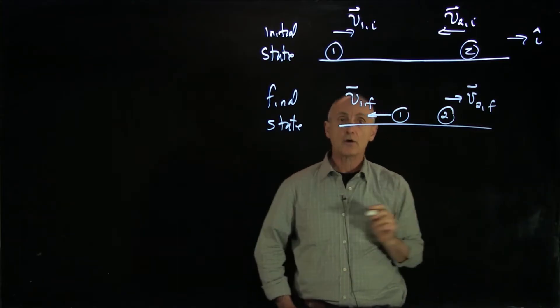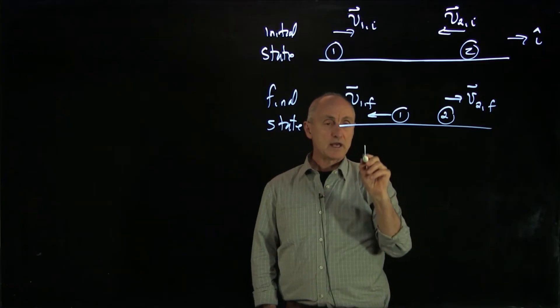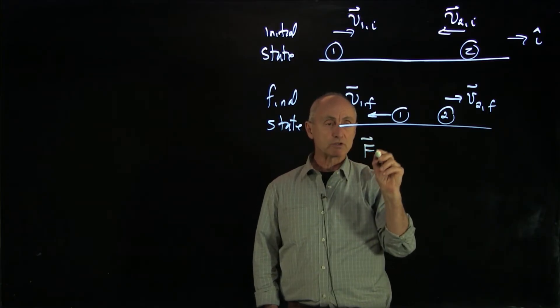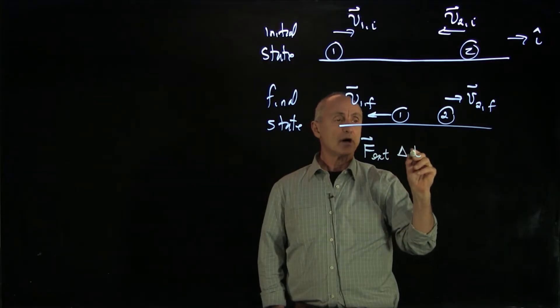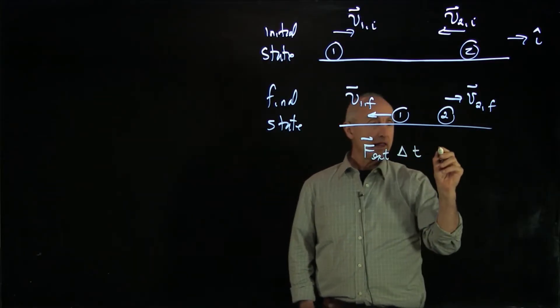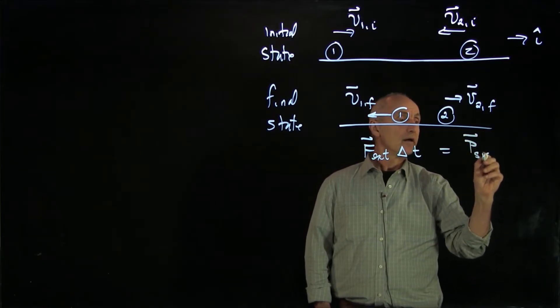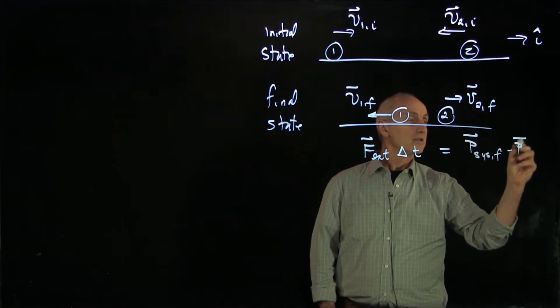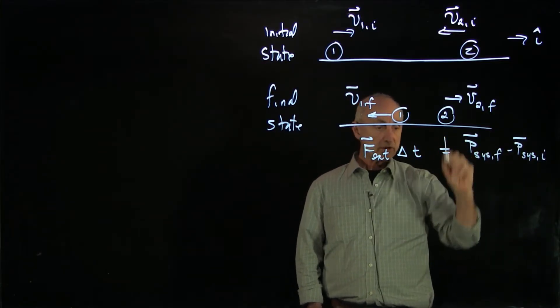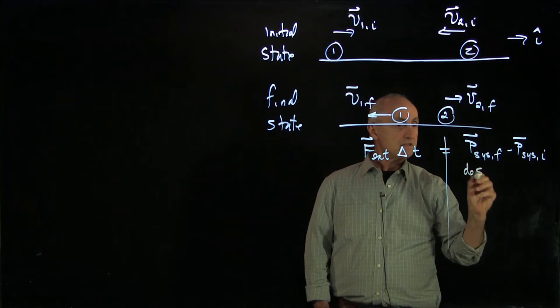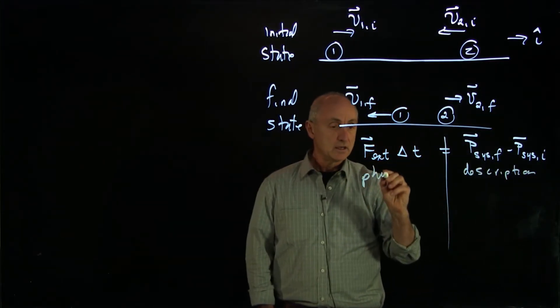Now recall our principle of impulse and momentum. We said that if there is an external force during the time of a collision delta t, then physically that will cause the momentum of the system final minus the momentum of the system initial. Now when we do this analysis, this side was a description, and this side is physics.